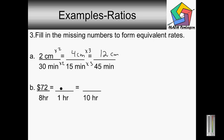Okay, let's go to our next problem. We have seventy-two dollars over eight hours equals blank over one hour. So one hour goes into eight hours eight times. One times eight is eight, and then we divide — eight goes into seventy-two nine times. So we have now nine dollars in one hour.